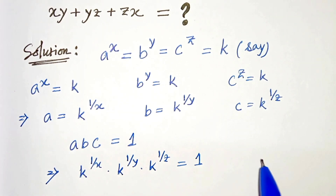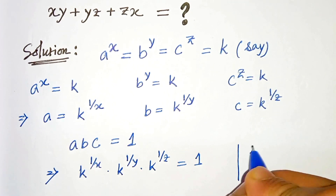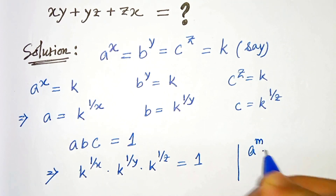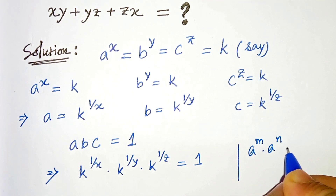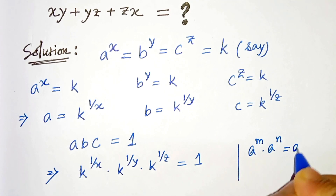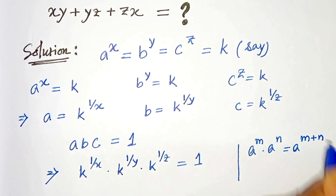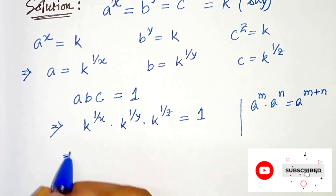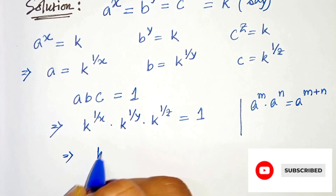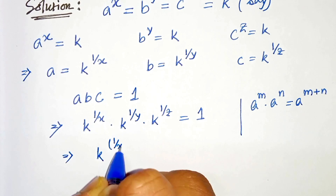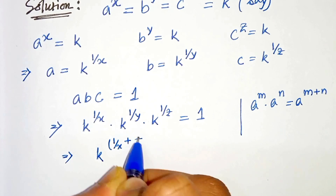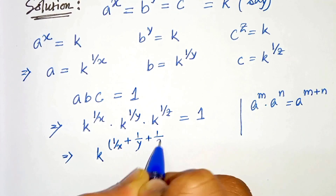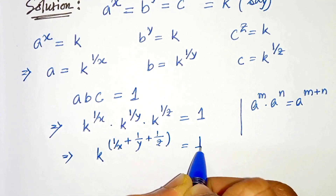We know from the exponential property that a raised to the power m times a raised to the power n can be written as a raised to the power m plus n. So from this we can write k raised to the power 1 over x plus 1 over y plus 1 over z, which equals 1.